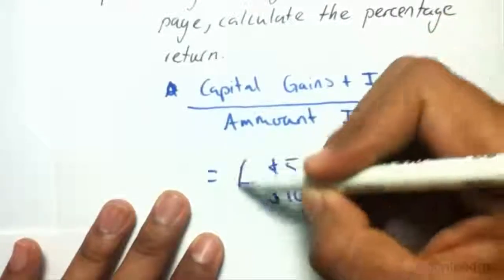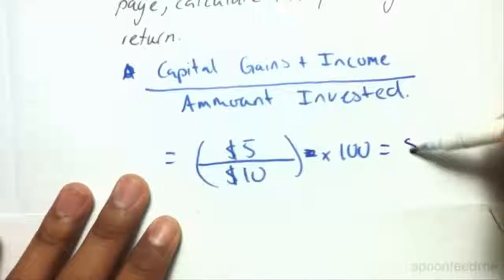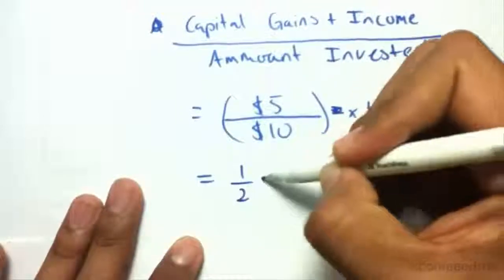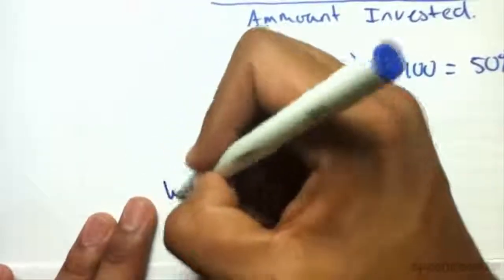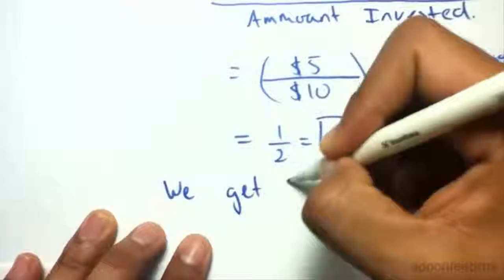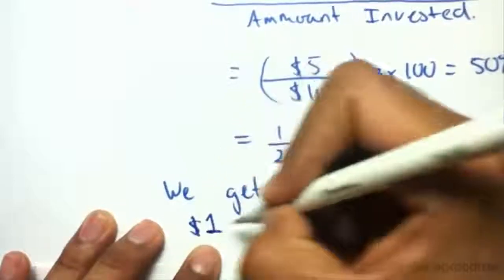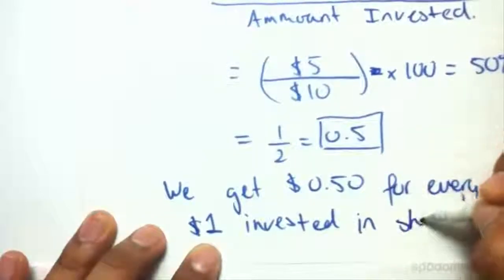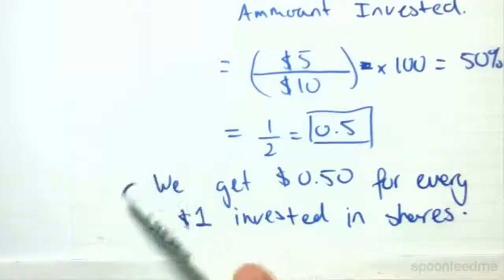We have to times this by 100 to get our percentage. Our percentage return is 50%, but what does this mean? This is also equal to one-half, and that's equal to 0.5. So this furthermore means that we get $0.50 for every dollar invested in shares.